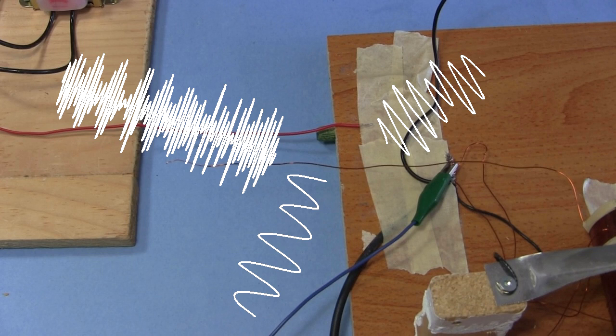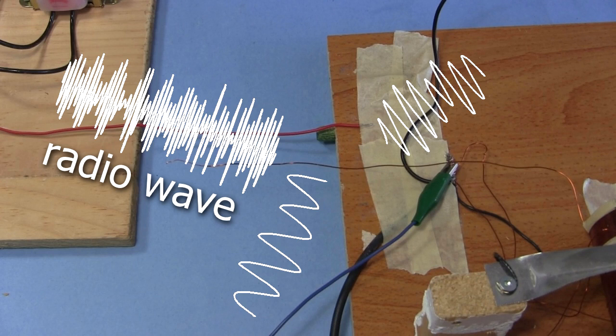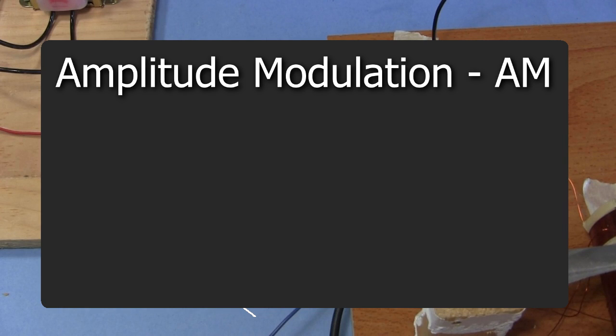But I can make a new wave that looks like this. Notice that the general outline is my audio wave. But in reality, it's made up of a single wave that's all the same frequency. This is called the radio wave. And that's what's called amplitude modulation, or AM.